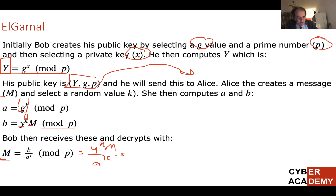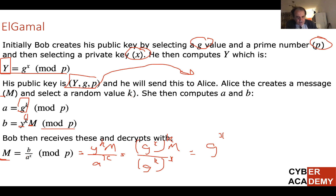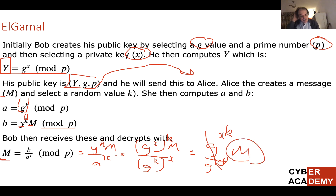Expanding the math: Y to the power of K is G to the power of X to the power of K, divided by A which is G to the power of K to the power of X. Since G to the power of XK over G to the power of XK equals 1, these cancel out, leaving just the message M. So we recover only the message in the end.